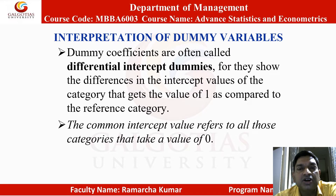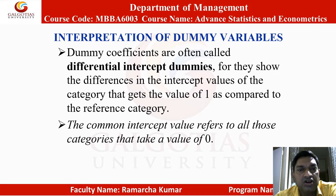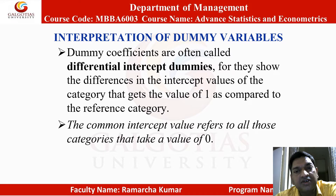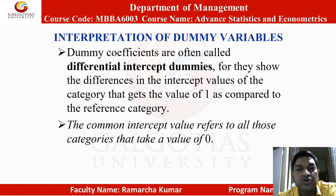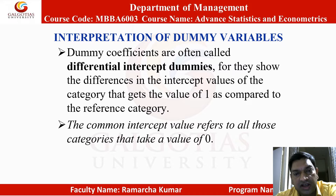Interpretation of dummy variables. Dummy coefficients are often called differential intercept dummies. They show the differences in the intercept values of the categories that get the value of 1 as compared to the reference category. The common intercept value refers to all those categories that take a value of 0.